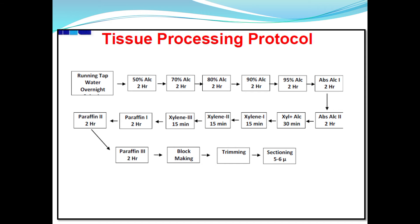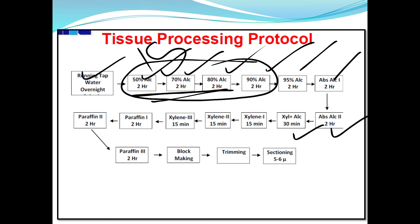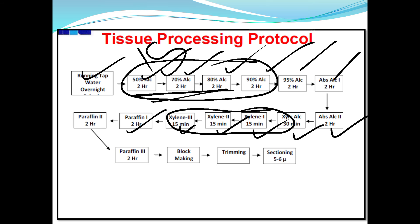The complete processing schedule: running tap water overnight, then 50%, 60%, 90%, 95% alcohol (each 1.5–2 hours), absolute alcohol 1 and 2, then xylene plus alcohol (30 minutes), then xylene 1, 2, 3 (15 minutes each — can be decreased but not increased according to tissue type). Then paraffin 1 (2 hours), paraffin 2 (2 hours, can be overnight), paraffin 3 (2 hours), then block making.